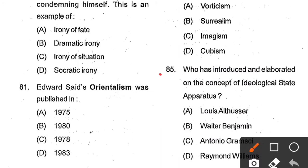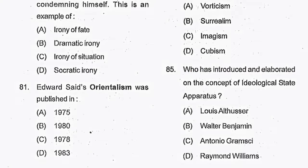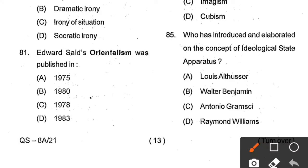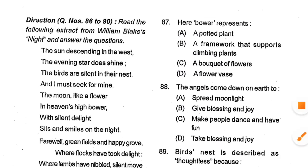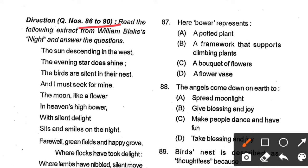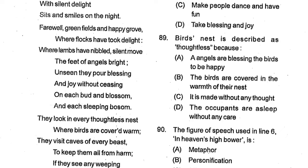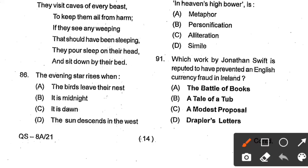From question number 86 to 90, one poem is given; read the poem carefully. Question number 86: The evening star rises / When the birds leave their nest / It is midnight / It is dawn / The sun descends in the west. The correct answer is option D — it is dawn. Question number 87: Here 'bower' represents ___. Options: death, a pot plant, a framework that supports climbing plants, a bouquet of flowers, a flower vase. Option C, a framework that supports climbing plants, is the correct answer.